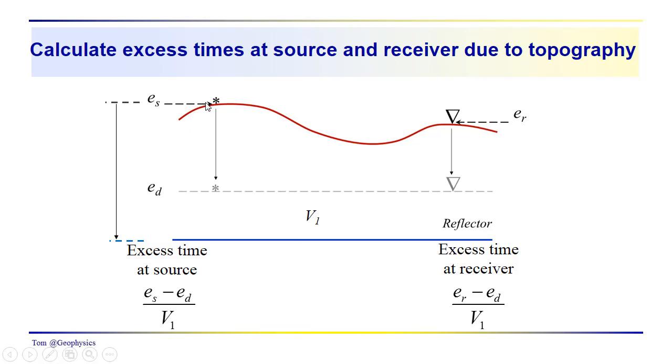Over here, what we have to do is remove the excess travel times from the source and the receiver. We take a look at the source. We've got the datum over here. This is where we want to put the source. This difference in elevation here is just e sub s minus e sub d. So you can see that the source term is just e sub s minus e sub d over V1. It's the excess time at the source. This is the excess time at the receiver, e sub r minus e sub d. We've replaced this entire interval mathematically with materials that all have the same velocity, this V1. So our correction velocity here in this case is V1. We have e sub s minus e d over V1, e sub r minus e sub d over V1.